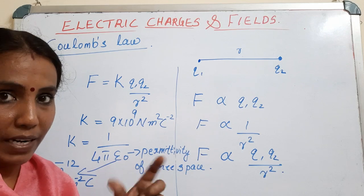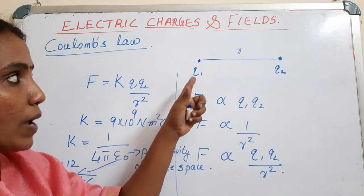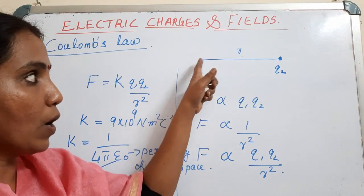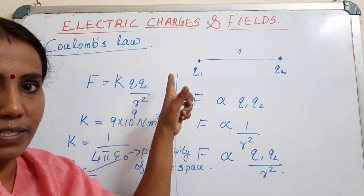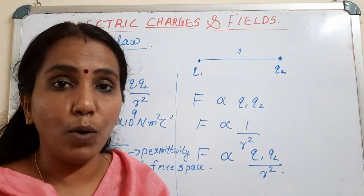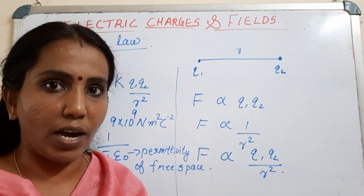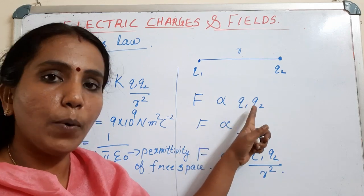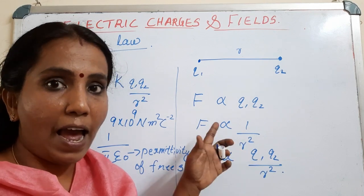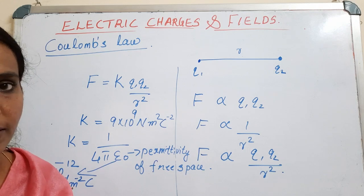The law becomes complete by mentioning the direction of the force. We already know that like charges repel and unlike charges attract. According to Coulomb's law, the force acts along the line joining the centers of the two charges.